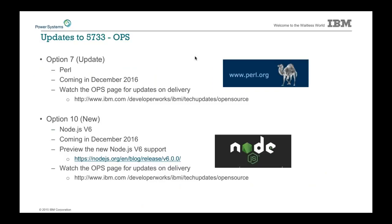Other open source updates: OPS will be updated, but these updates won't happen in November — they'll be one month following, in December 2016. We'll be adding Perl, added to our Option 7 tools option. You'll just get the latest PTF and you'll magically get Perl.